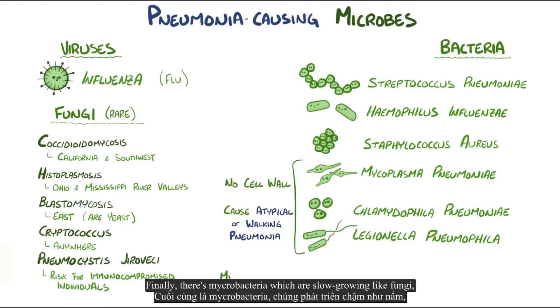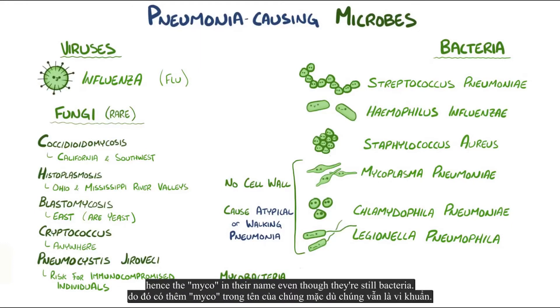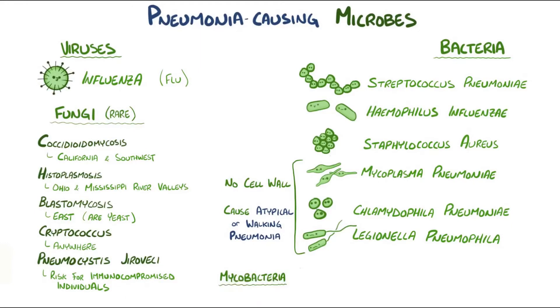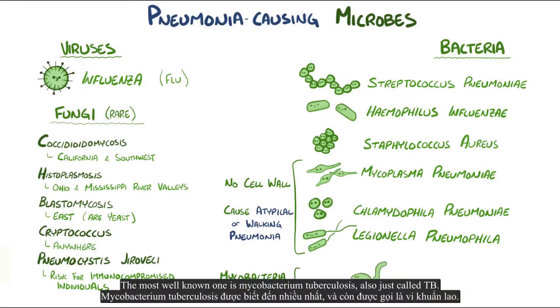Finally, there's mycobacteria, which are slow-growing like fungi, hence the myco in their name even though they're still bacteria. The most well-known one is Mycobacterium tuberculosis, also just called TB.